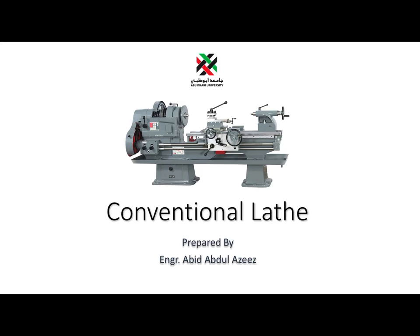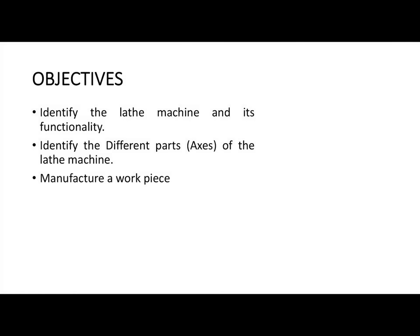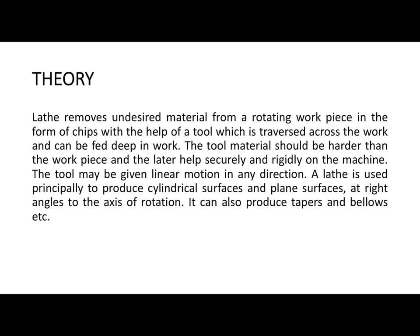Today we are going to discuss the third experiment: the conventional lathe experiment. Our objective is to identify the lathe machine and its functionality, identify the different parts of the lathe machine, and later manufacture a workpiece. In theory, a lathe removes undesired material from a rotating workpiece in the form of chips, with the help of a tool which is traversed across the work and can be fed deep into it.